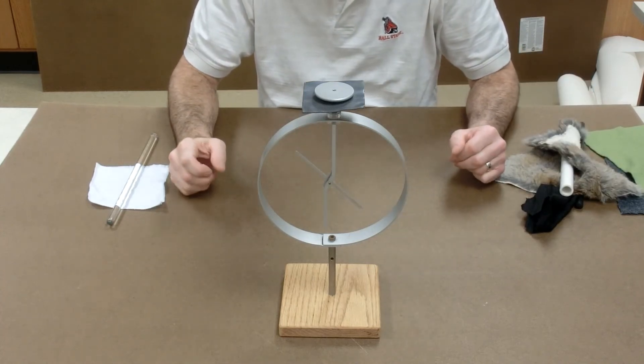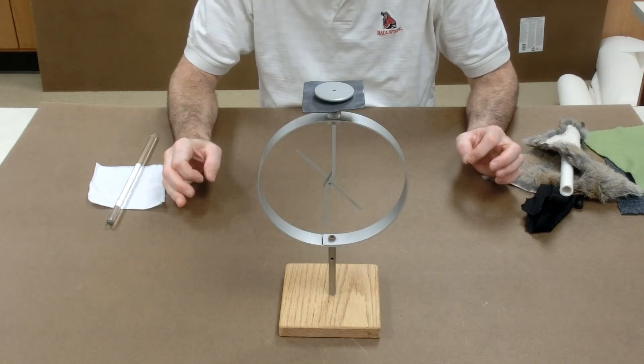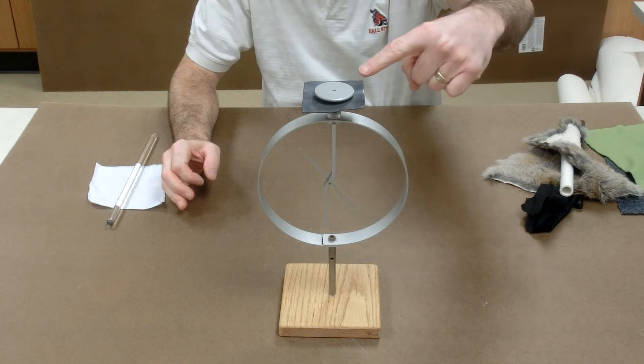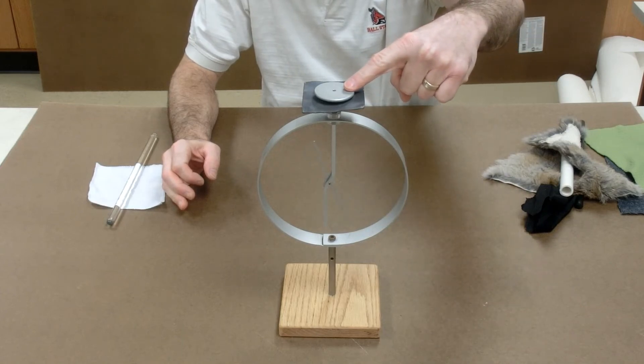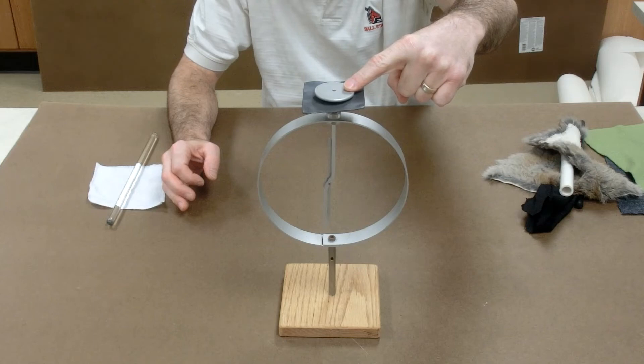So the electroscope is now positively charged. In order to make it neutral, I bring my finger by it, I ground it, and electrons are pulled from the ground into my body, into my finger, into the electroscope until it becomes neutral again.